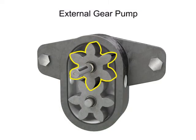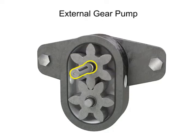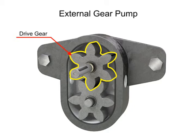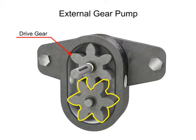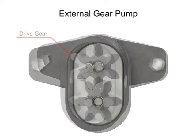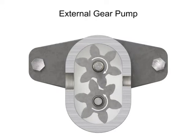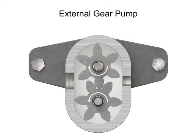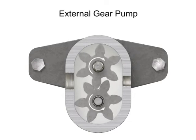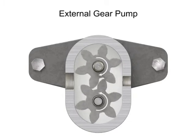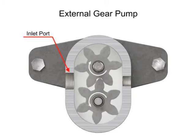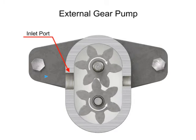One gear is driven by a motor connected to a shaft. This is called the drive gear because it is driven by a motor, and it in turn meshes with and drives the movement of the second gear. As the gears rotate away from each other and come out of mesh, they create an expanding volume on the inlet side of the pump, creating a vacuum at the inlet port allowing fluid to flow into the pump.